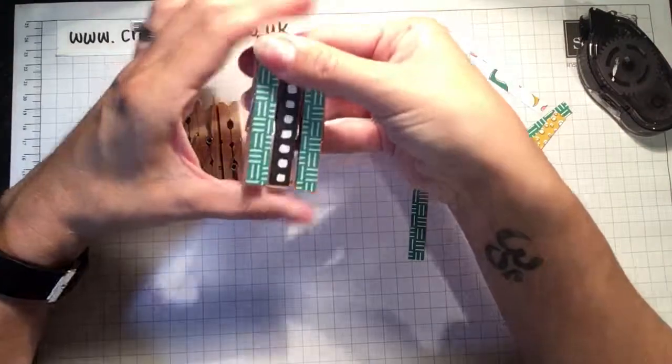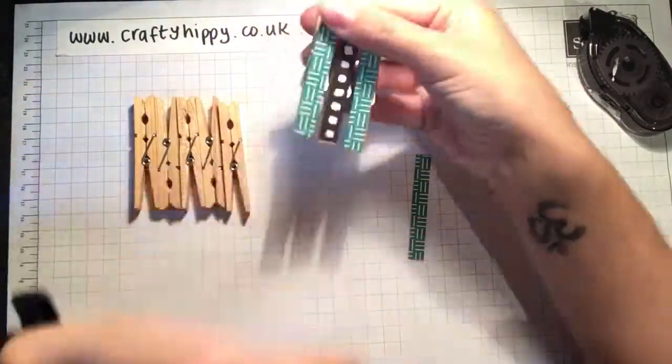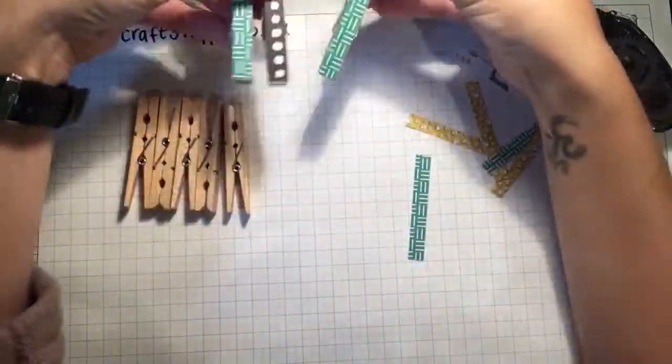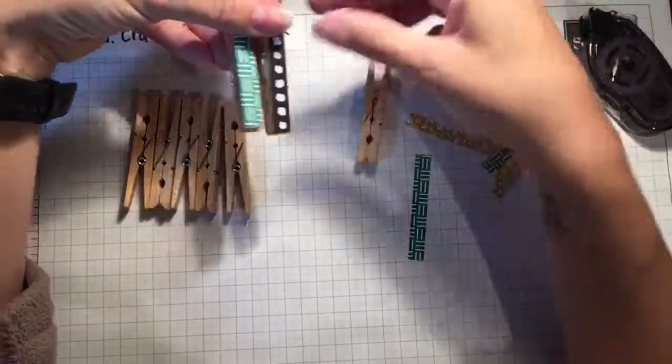You could line the pegs up like that and then put them on a piece of cardboard to hold them. Really great idea. And they just make your washing look a bit nicer on the line.